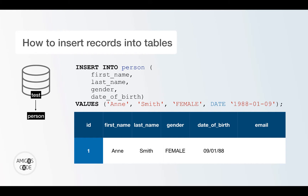Then we have to use VALUES, which takes an array of values matching the columns' data types. So in our case: Anne, Smith, female, and then the date of birth — which is actually a date and not a string. The way you represent dates is by saying DATE, and you have to make sure the year comes first, then the month, and then the actual day. So this is how you insert new records into any table.